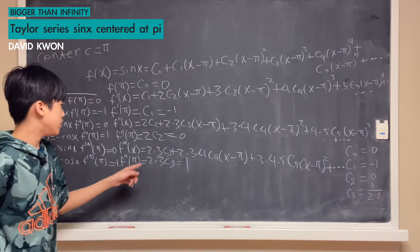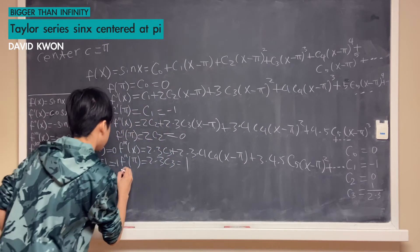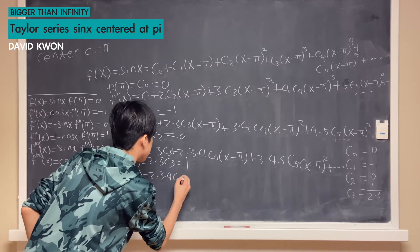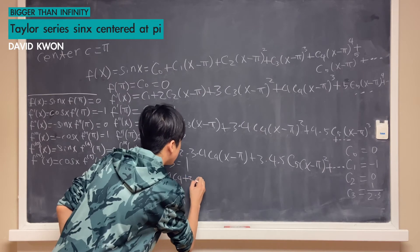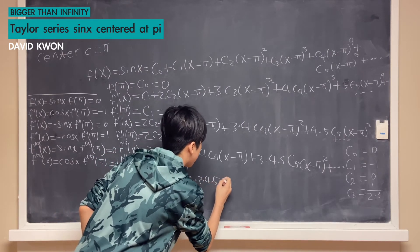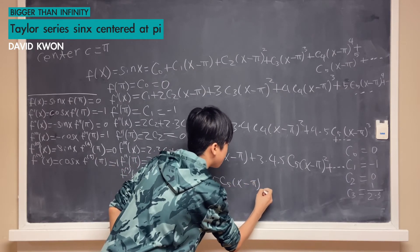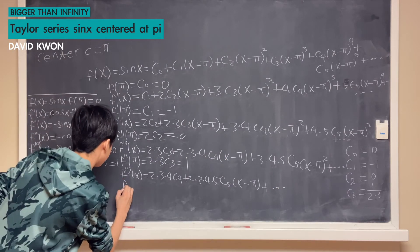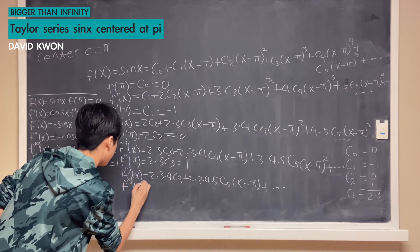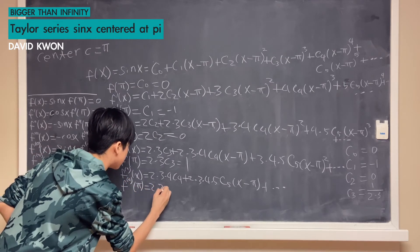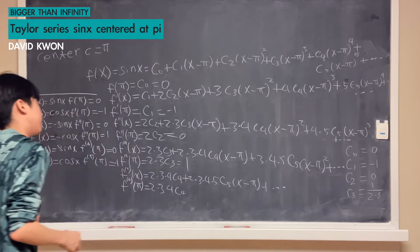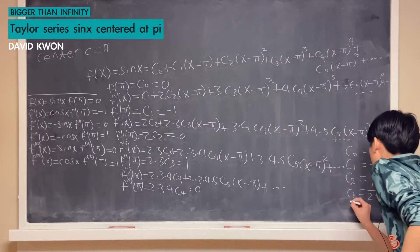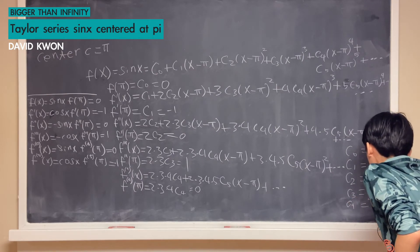Differentiating again, we get f⁽⁴⁾(x) equals 2·3·4·c₄ plus 2·3·4·5·c₅·(x−π) plus dot dot dot. Setting x equal to π, we get f⁽⁴⁾(π) equals 2·3·4·c₄. Since f⁽⁴⁾(π) equals 0, our c₄ equals 0.